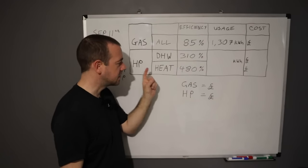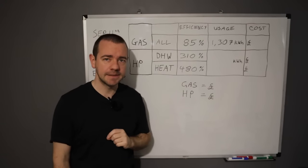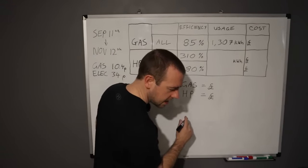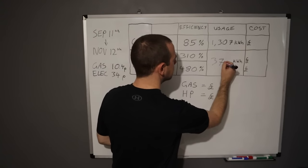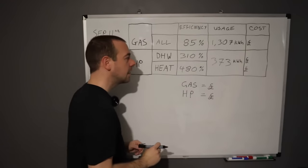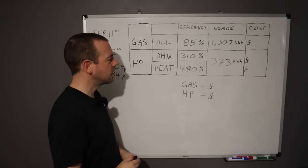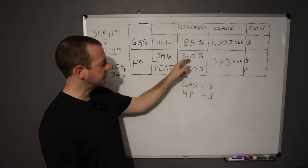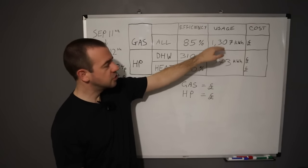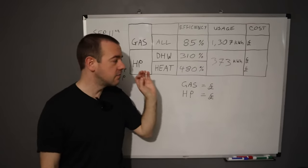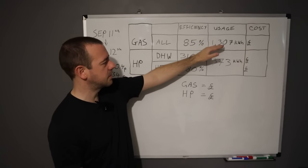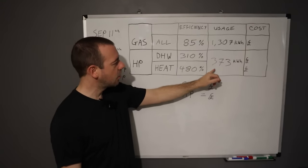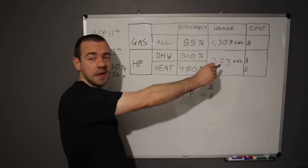Right, so how many kilowatt hours did the heat pump use in electricity in this period? It is 373 kilowatt hours worth of electricity. Now you might be looking at these efficiency figures and going, hang on a minute, even if we look at that and then look at that, there's something not right here. And you're correct. There is another reason for this discrepancy.